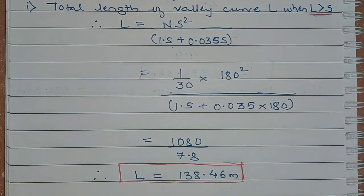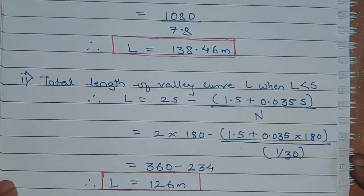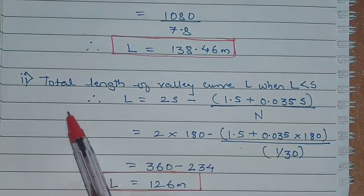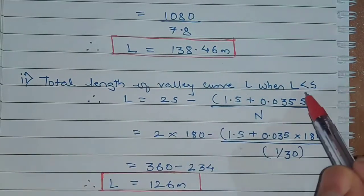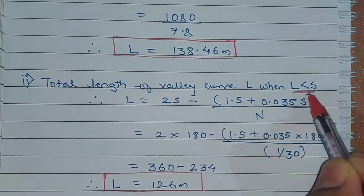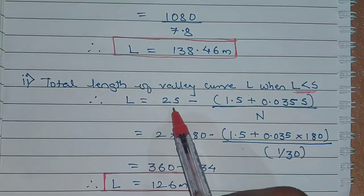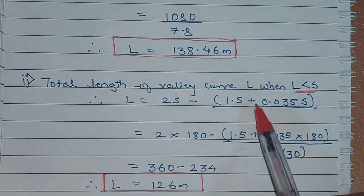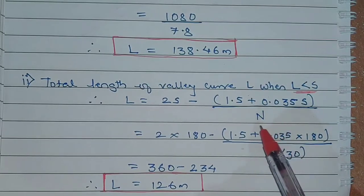Now considering the second condition, when the total length of the valley curve L is less than the stopping sight distance, we use the formula 2 times S minus 1.5 plus 0.035 multiplied by S upon N.